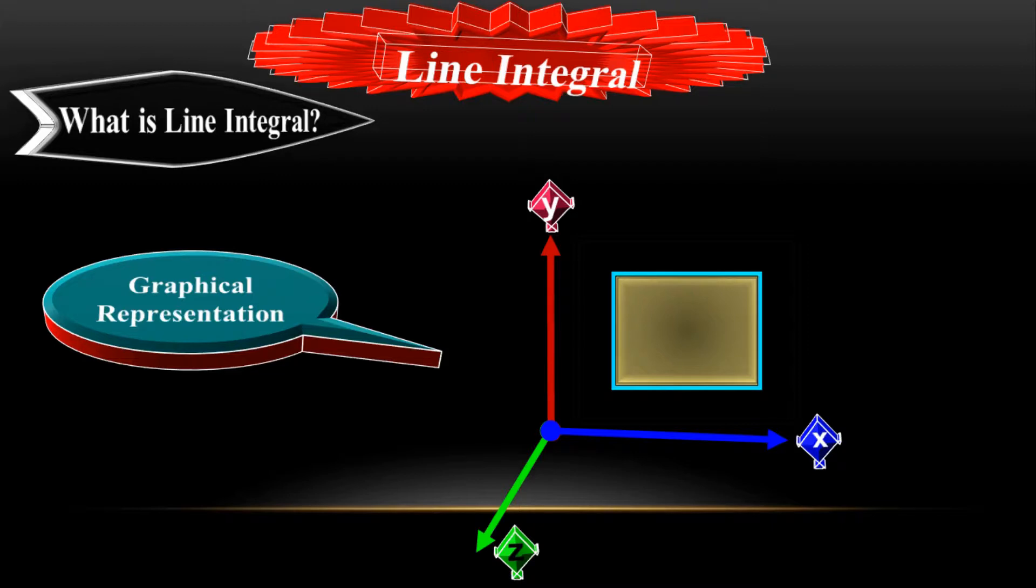Look, we don't deal with the area under that curve which is in a gray color. We only deal with the line, the boundary of this surface. So line integration is the integration on the curve of a surface, on the border of a surface.